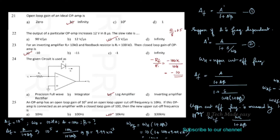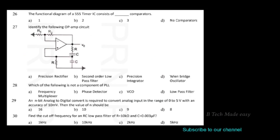Next question: the functional diagram of a 555 timer IC consists of how many comparators? Option A: 1, Option B: 2, Option C: 3, Option D: no comparators. Option B — 2 comparators — is the correct answer.